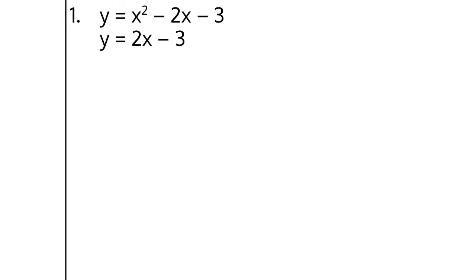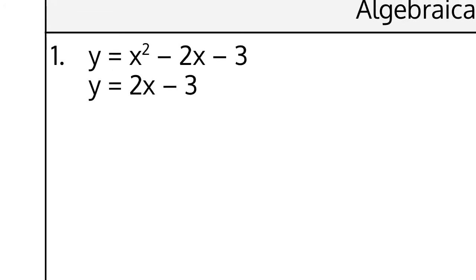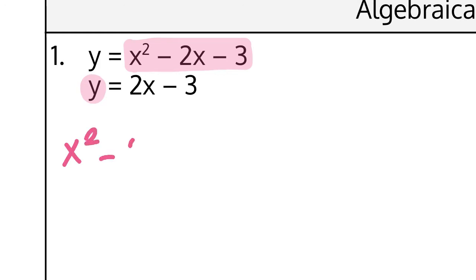I have a few options when it comes to solving. Much like the systems we've already been doing, you can solve by substitution or by elimination. I'm going to give you examples of each type, but let's start with substitution. Both equations are set up as y equals an expression. That means I can take the top expression — since that pink part equals y — and replace the y in the other equation with that expression. So this turns into x squared minus 2x minus 3 equals 2x minus 3.